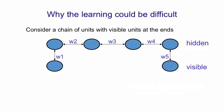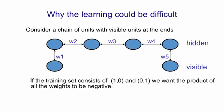Now there are many reasons why the learning could be difficult. This is probably the most important reason. If you consider a chain of units, a chain of hidden units here, with visible units attached to the two ends, and if we use a training set that consists of (1,0) and (0,1), in other words, we want the two visible units to be in opposite states, then the way to achieve that is by making sure that the product of all those weights is negative.